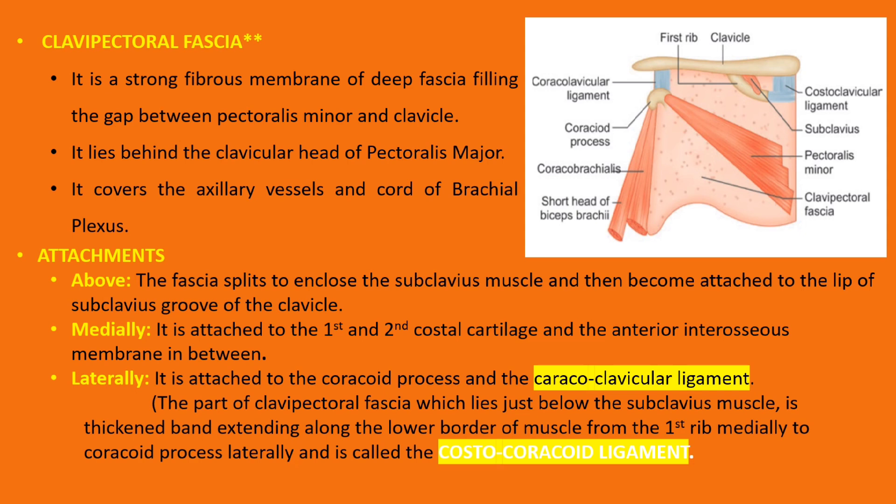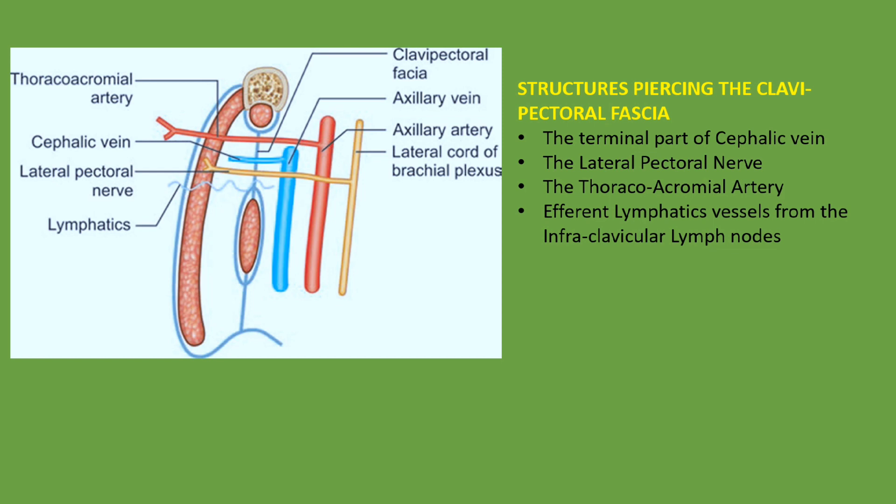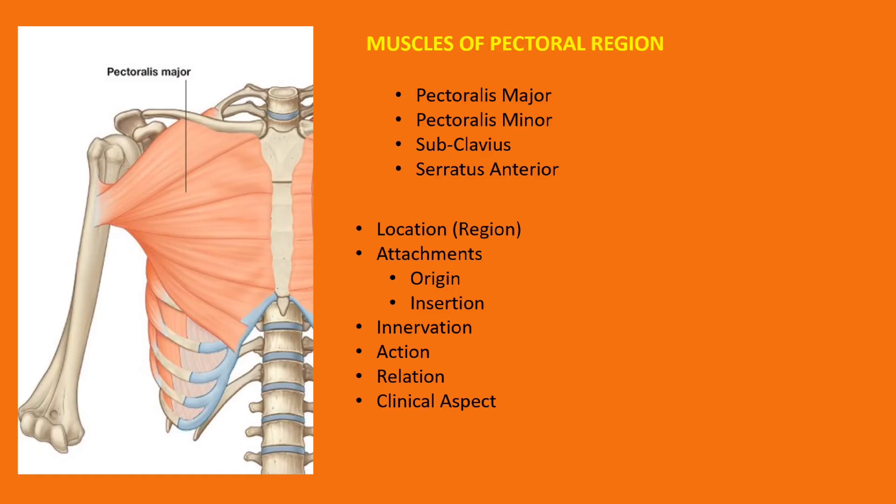The structures that pierce the clavipectoral fascia are: the terminal part of the cephalic vein, which comes from the outer side, pierces this fascia and drains into the axillary vein; the lateral pectoral nerve, which comes from the brachial plexus and supplies the pectoralis major muscle; the thoracoacromial artery, which is a branch of the axillary artery and superficially supplies the pectoralis major muscle; and the efferent lymphatic vessels from the infraclavicular lymph nodes. Two diagrams need to be drawn for this topic.